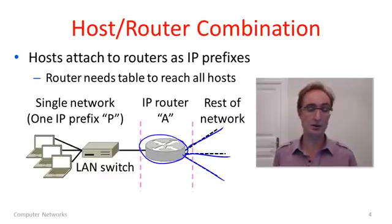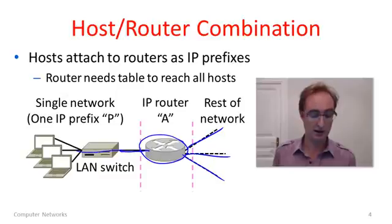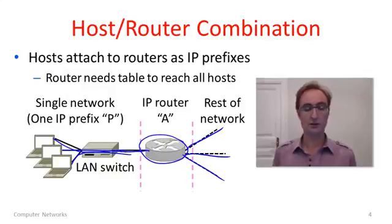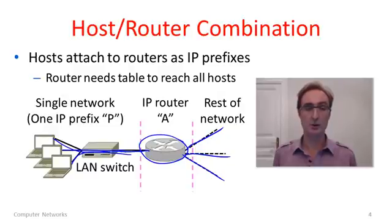But we also have hosts in these networks, so where do they fit? The hosts are attached to the routers. Often there is a LAN switch, so that we can attach multiple different hosts to the same LAN. As far as the router is concerned, all of these hosts are reachable over that one wire or wireless link. Even though there are multiple hosts, it's really a single network — a single prefix that they're all representing. Whether it's one host or many, they're all on the same prefix.